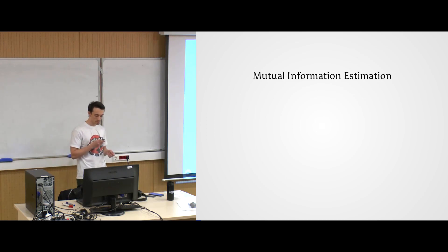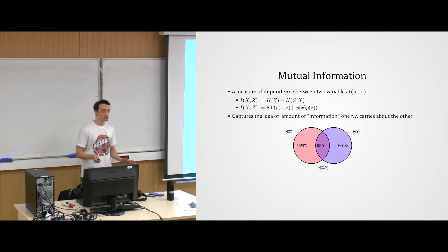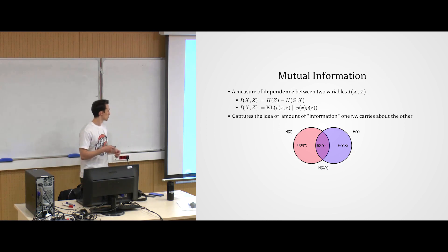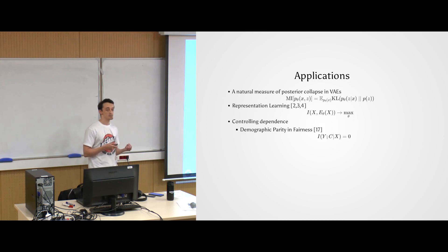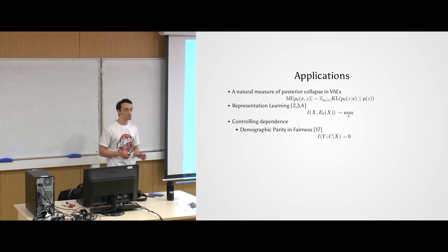So how do you actually estimate mutual information? If you know the densities — both marginal and joint densities — things are easy: you can just form a Monte Carlo estimate. But often you don't have this full knowledge. Sometimes you don't know any distributions and can only sample from the joint and marginals. Then we're out of luck with an unbiased estimate. There are some estimators out there, but they are not guaranteed to be unbiased, lower bounds, or upper bounds. We would like more than that — we would like some guarantees.